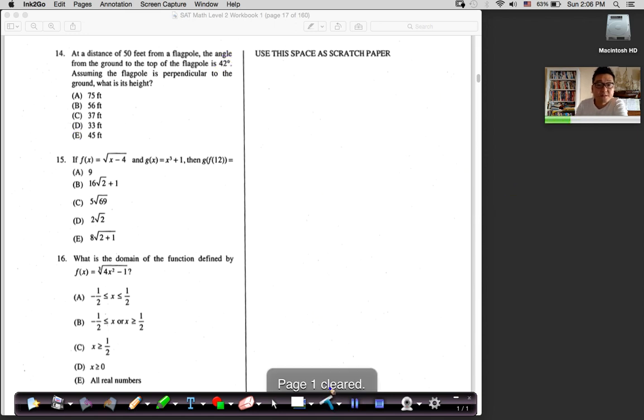I'm going to clear this. 15, F of X, G of X, and another G of F of 12 thingy. What did I say? We've got to work inside out. 12. I'm going to stick 12 in where? In F. So if I put 12 in here, what do I get? 12 minus 4 is 8. So it's root 8, right? So your F of 12 is root 8.